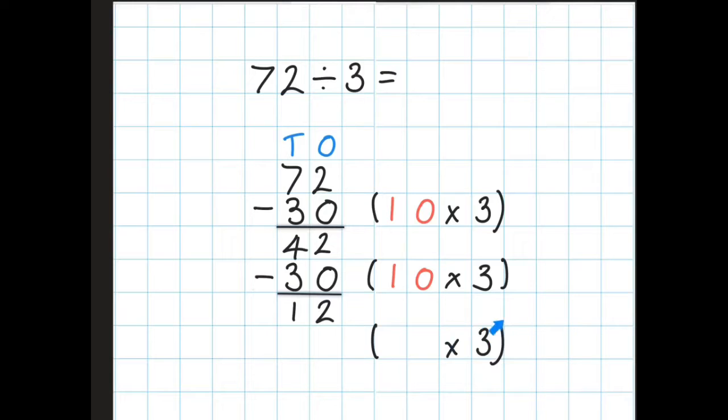We have to take off chunks of 3 from 12 until we are left with nothing. I know that 4 times 3 is 12, so I'm going to take 12 away from 12. 12 minus 12 is 0. There's nothing left.